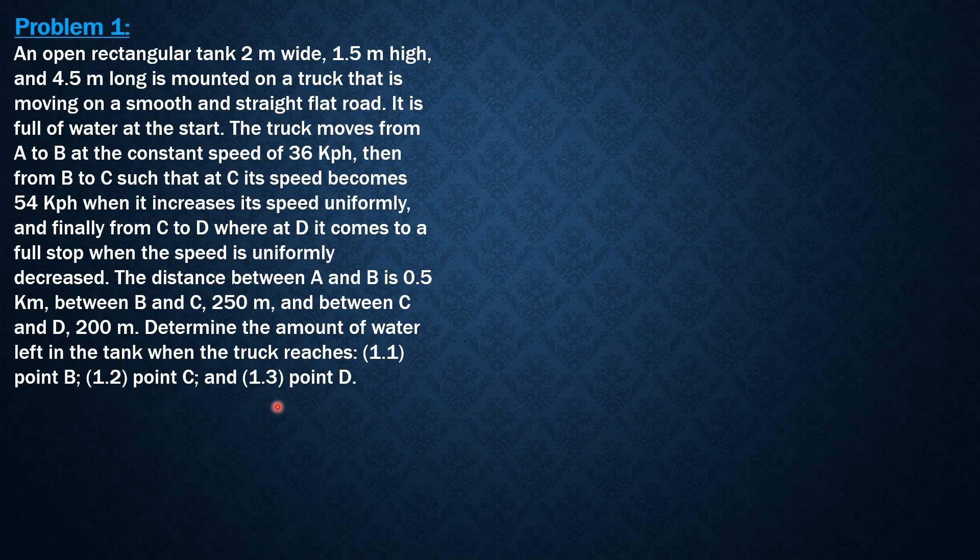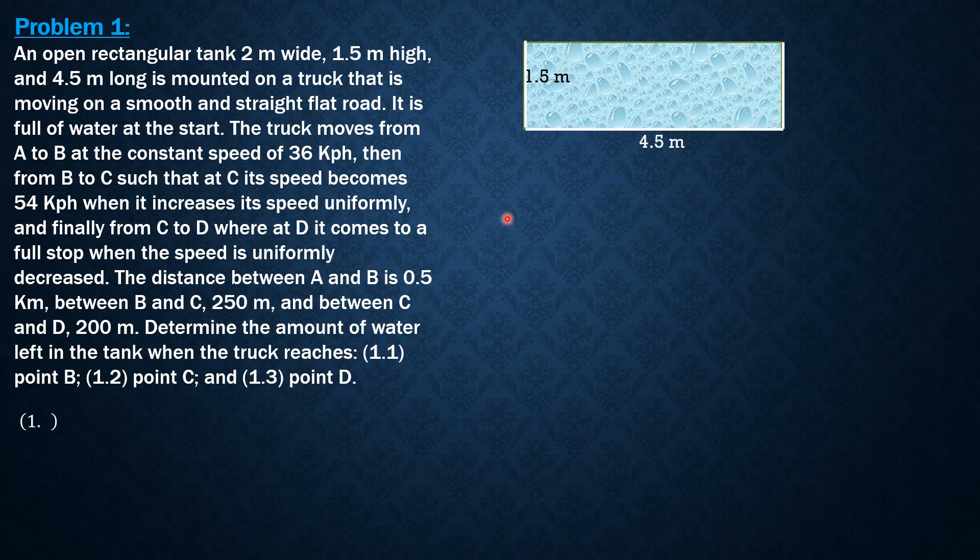For the first question, because the truck moves at a constant speed between A and B, we expect that the water surface on the tank remains horizontal. So we expect no liquid will be spilled for the first situation. Therefore, the volume left at B would be the volume of water in the tank, which is 4.5 times 1.5 times 2 meters.